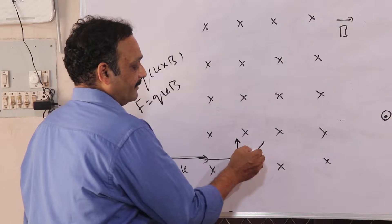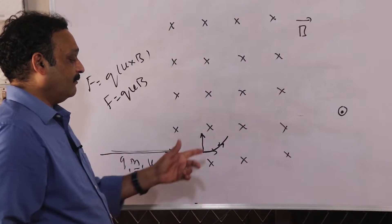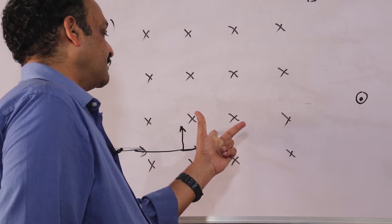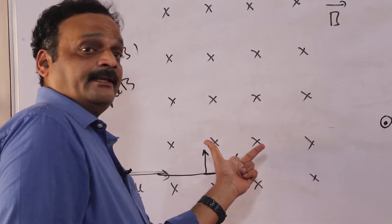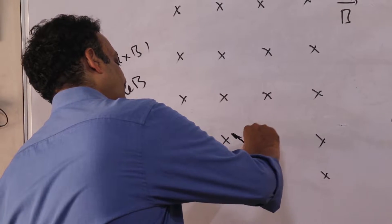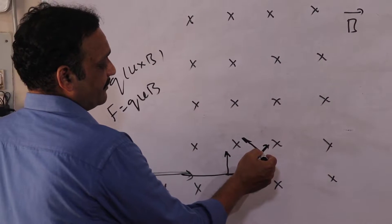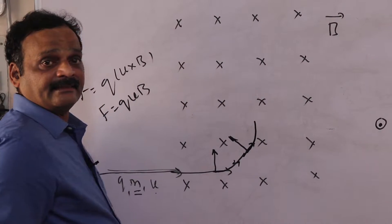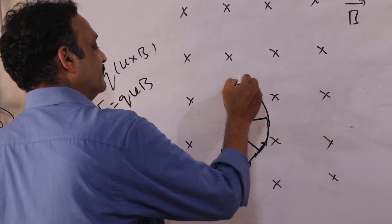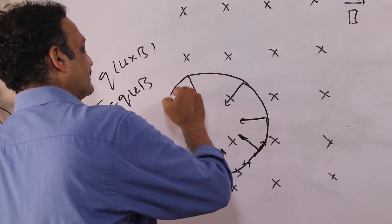Because the force is perpendicular, the particle will try to move in the direction of the force. When the particle's direction changes, the velocity is now in some other direction. The magnetic field is still pointing into the board, so the force direction also changes and is again perpendicular to the new velocity. Whenever the force is always perpendicular to the direction of velocity, the particle's path will be bent into a circle.